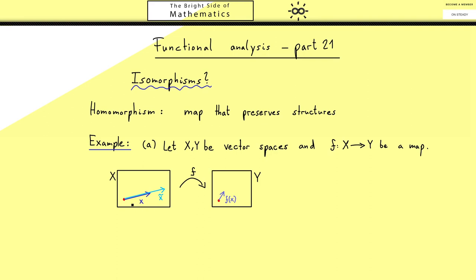So conserving the scalar multiplication means if we consider a new vector x tilde which is just a scaled x, then this new vector is also mapped to the same line as f(x). And of course it should have the same scaling factor. Putting this idea into formulas then gives us f(λx) is the same as λ times f(x).